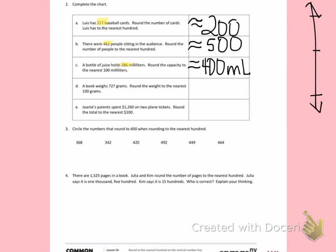D, a book weighs 727 grams. 727 is the number I have to round. 700 goes at the bottom of my number line, 100 more than that is 800. Halfway between those two would be 750. 727 would not be past the halfway number, so I will be rounding down to 700 grams.